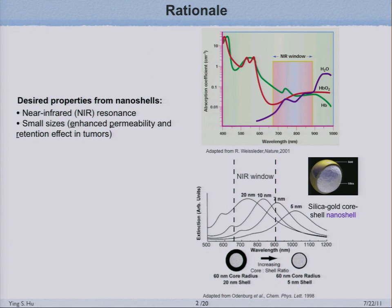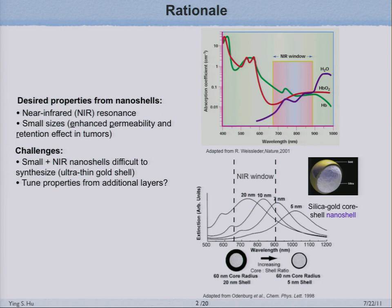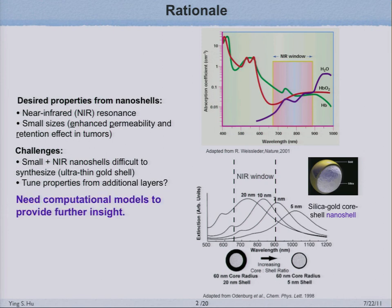There are a couple of desired properties for nanoshells. We'd like them to have near-infrared resonances, and also we'd like them to be small, preferably smaller than 100 nanometers, because particles larger than 100 nanometers do not penetrate the blood vessel very effectively, resulting in low targeting efficiency. However, it's very difficult to make these near-infrared nanoshells smaller than 100 nanometers, because in order to have near-infrared resonance, the thickness of the gold shell needs to be on the order of 10 nanometers or lower, which is very difficult to fabricate as a continuous smooth shell. So the question I asked was: can we tune optical properties not just from the outside gold shell, but by adding additional layers to the inside of the particle? We need computational models to provide further insight.